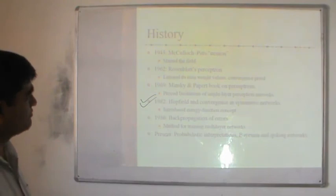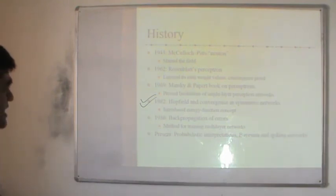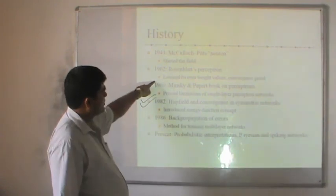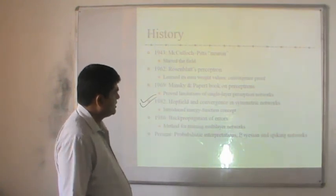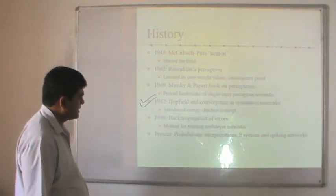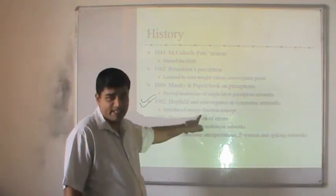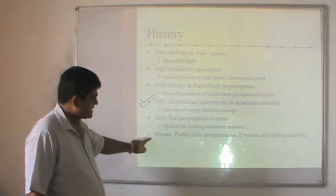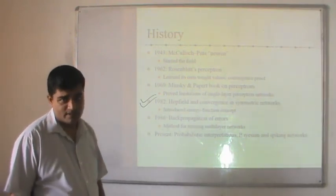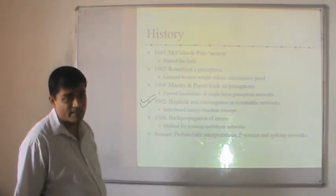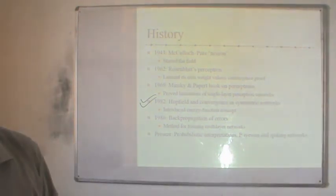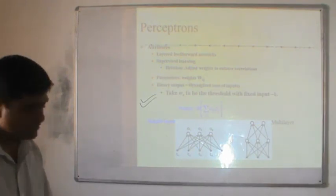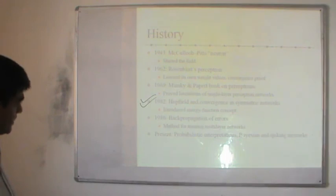The basic history of neural networks: in 1943 McCulloch-Pitts neural model started the field; in 1963 Rosenblatt's Perceptron was introduced; Minsky and Papert identified Perceptron limitations; in 1982 Hopfield introduced convergence in recurrent neural networks and the energy function concept; and in 1986 the backpropagation method for training multilayer neural networks was introduced, which is the most popular approach today. Probabilistic interpretations, Bayesian, and spiking networks are also present.